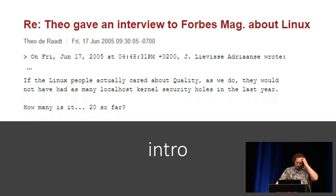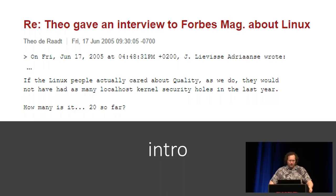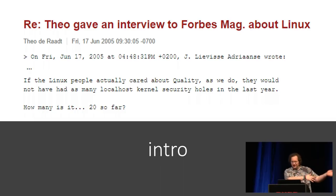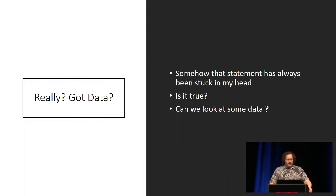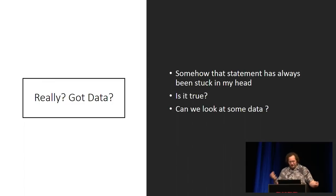The quote from Theo basically goes: if the Linux people actually cared about quality as the OpenBSD people do, they would not have had as many local root security holes as they had last year — which was 2005 — and Theo said 'how many is it, like 20 or so?' I thought: really, is that true? What's the data behind that? Can we look at some of this?